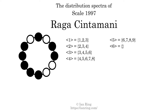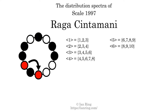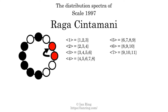The generic interval of 6 scale steps comes in 3 different specific interval sizes: 8 semitones, 9 semitones, and 10 semitones. The spectrum width of this generic interval is 2. The generic interval of 7 scale steps comes in 3 different specific interval sizes: 9 semitones, 10 semitones, and 11 semitones. The spectrum width of this generic interval is 2.